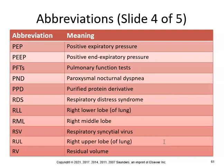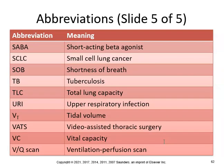PPD — purified protein derivative; RDS — respiratory distress syndrome; RLL — right lower lobe. The right lower lobe is where pneumonia typically settles, and when kids swallow certain objects, they usually end up in the right lower lobe. RML — right middle lobe; RSV — respiratory syncytial virus; RUL — right upper lobe; RV — residual volume.